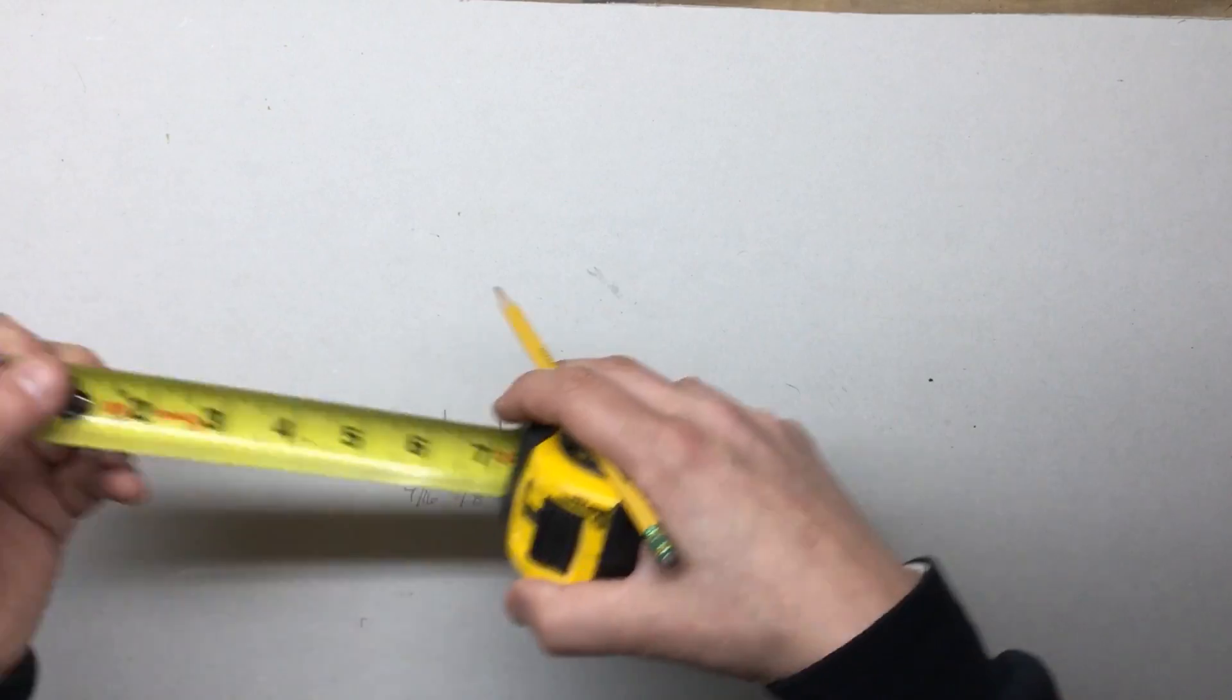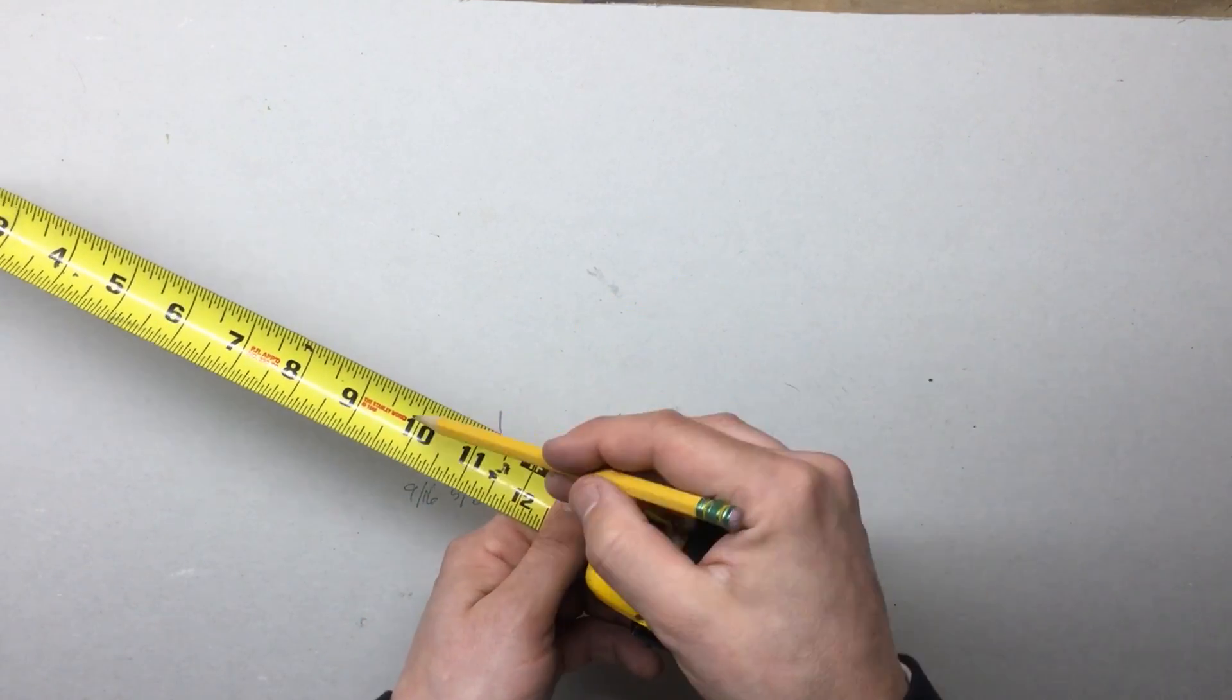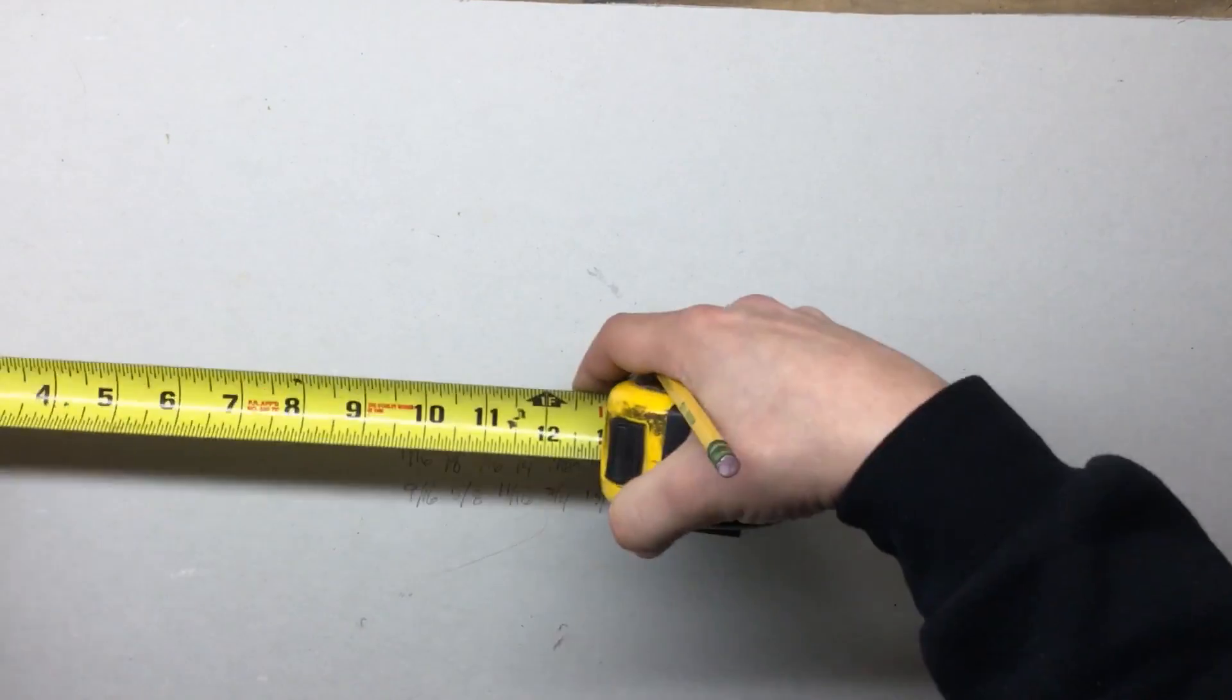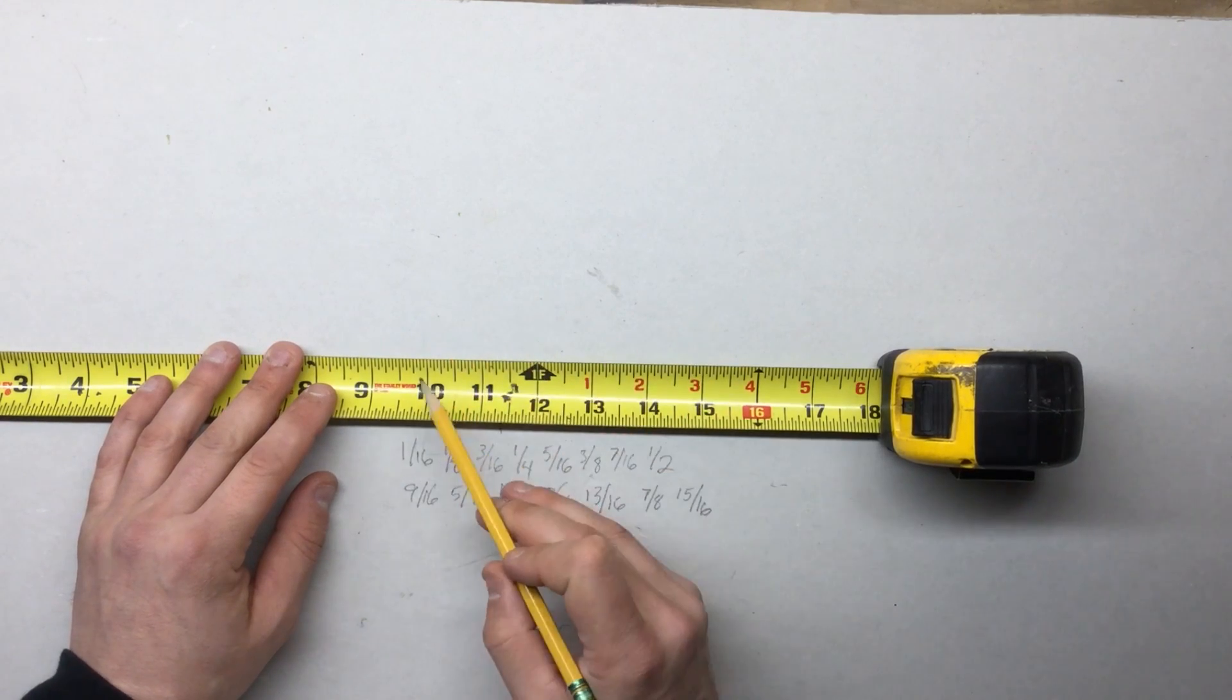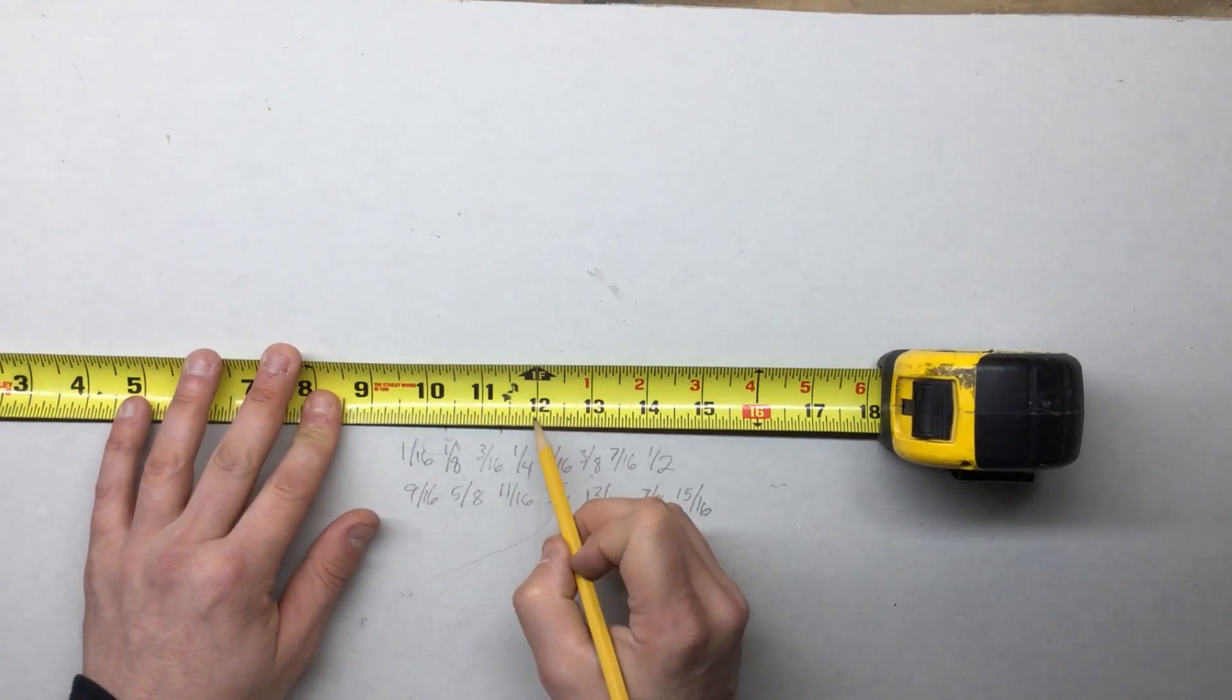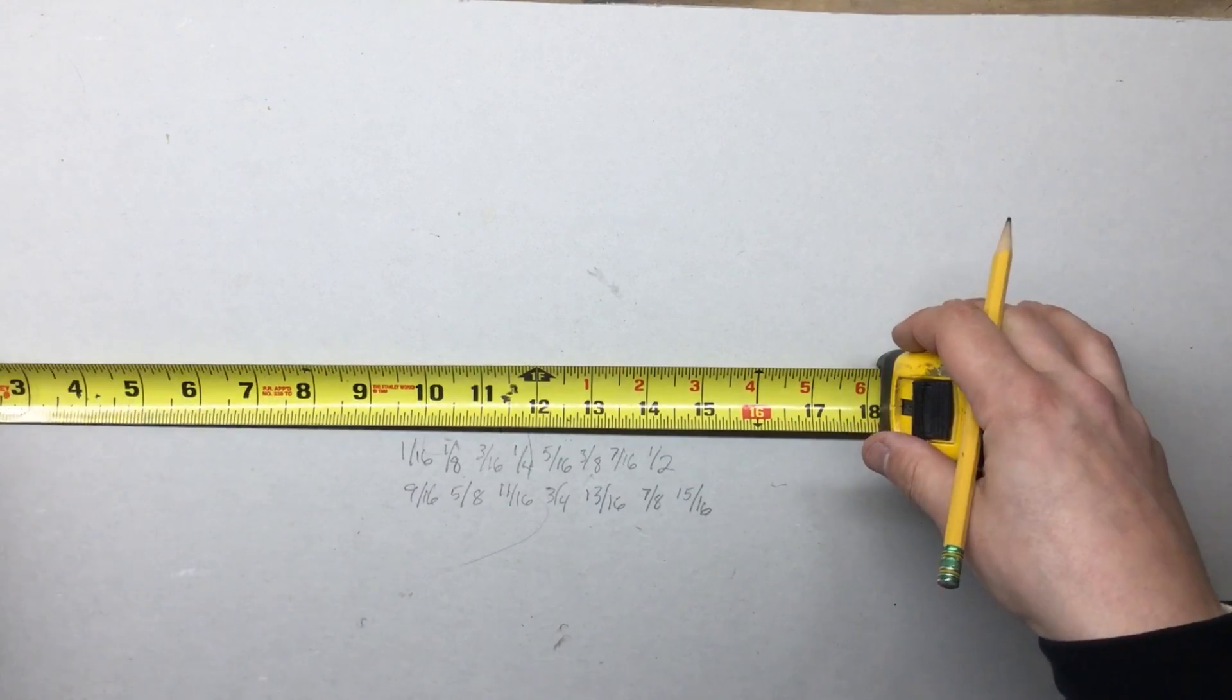And instead of just trying to take ten plus one inch and seven eighths and do the math out, you can just put your tape measure down, go to ten, one inch and seven eighths. Ten plus one inch plus seven eighths is going to give you eleven and seven eighths. That's an easy measurement again, but that's an example.